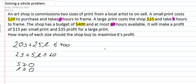Those are all my constraints. Over here I'm going to write down my objective function: the shop will make $15 per small print plus $35 per large print.